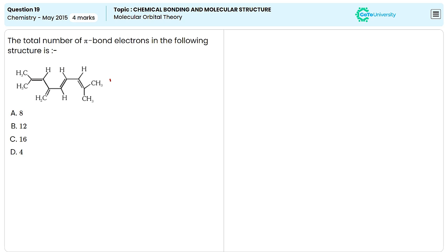An organic molecule is given in this question. We need to identify the total number of pi bond electrons present in this given compound.